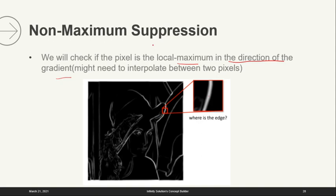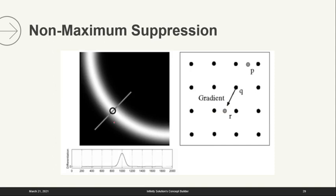Non-maximum suppression works as follows: we consider one single pixel, compute its gradient direction, and go along that gradient direction to neighboring pixels. There might be a need to interpolate between two pixels — P and R — in this gradient direction. We check if this pixel is a local maximum in the gradient direction.